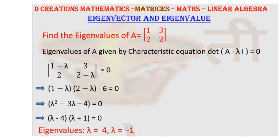So here we multiply these two terms, so that gives us 1 minus lambda into 2 minus lambda, minus 3 times 2 is 6, is equal to 0.